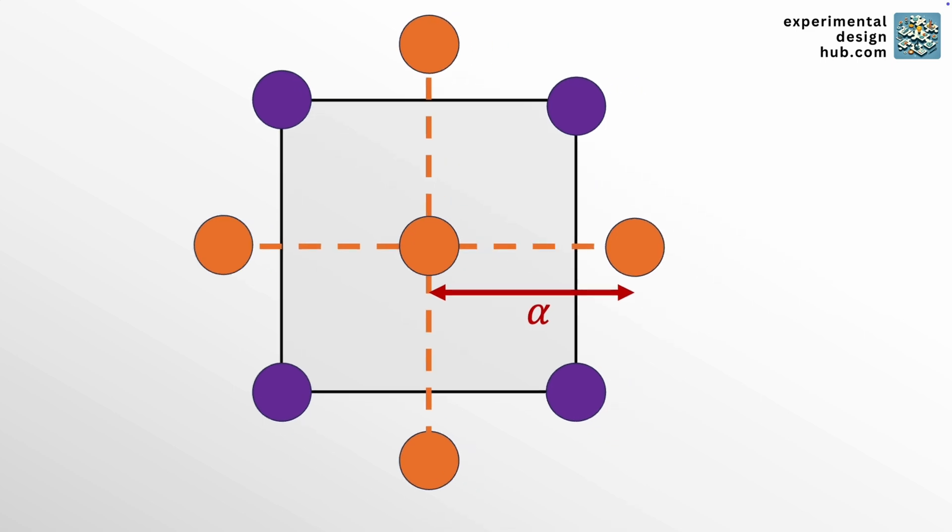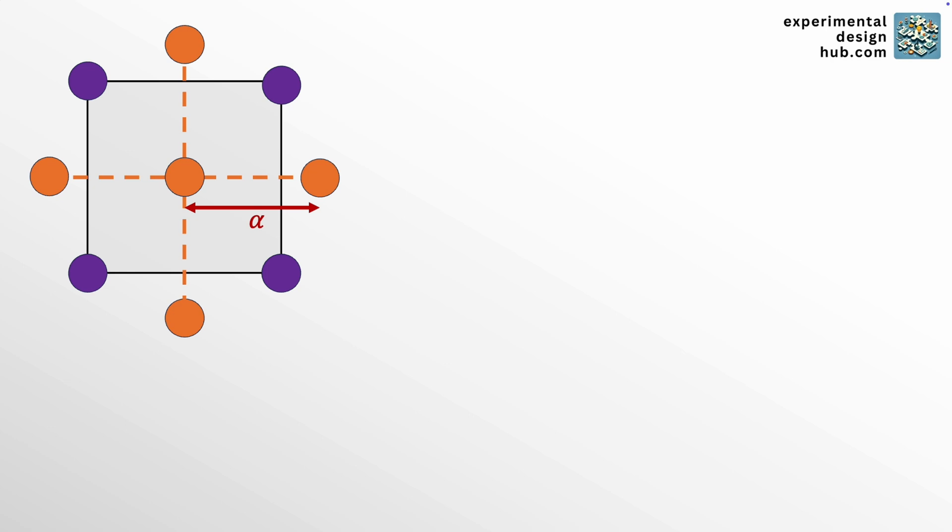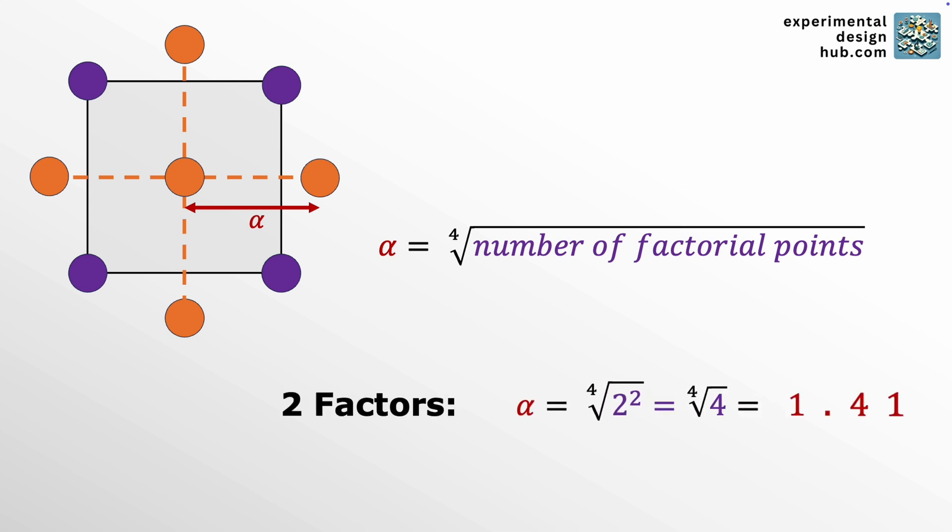Now, for a rotatable design, alpha can be calculated by taking the fourth root of the number of factorial points. For example, with two factors, the number of factorial points is 2 to the power of 2, which equals 4. And the fourth root of 4 equals 1.41. Or with three factors, the number of factorial points is 2 to the power of 3, which equals 8. And the fourth root of 8 is 1.68. And so on.